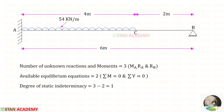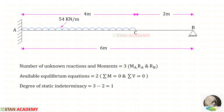Now let us find the degree of static indeterminacy. In this beam, the number of unknown reactions and moments are 3. The available equilibrium equations are 2. The degree of static indeterminacy will be 3 minus 2, which equals 1.